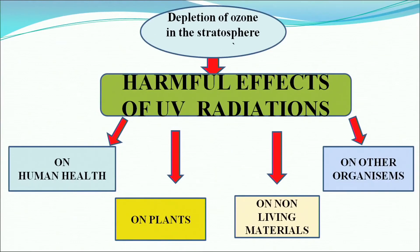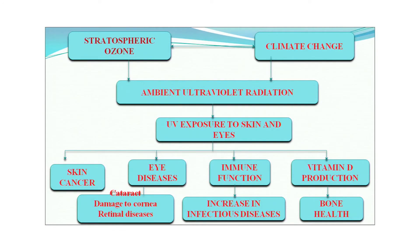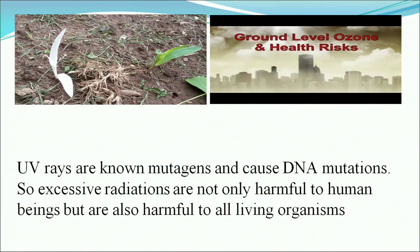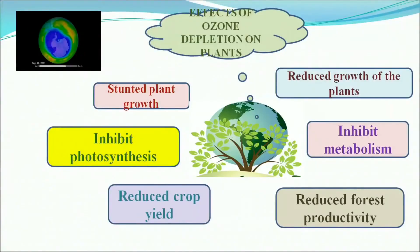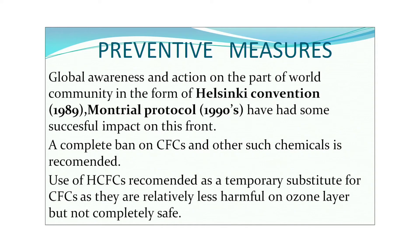Harmful effects of UV radiation affect human health, plant life, non-living materials, and other organisms. UV rays are known mutagens and cause DNA mutations, so excessive radiation is harmful to all living organisms. Effects on plant life include reduced plant growth, inhibition of metabolic reactions, reduced forest productivity, reduced crop yield, and inhibited photosynthesis resulting in stunted growth of plants. There is also destruction of phytoplankton.